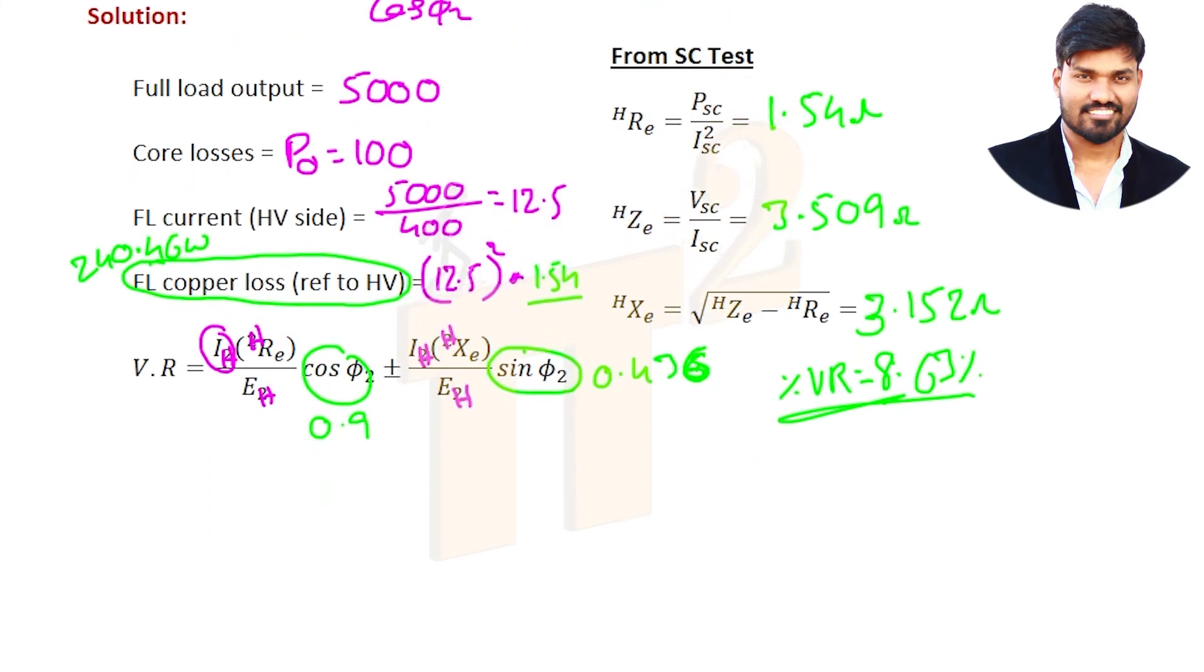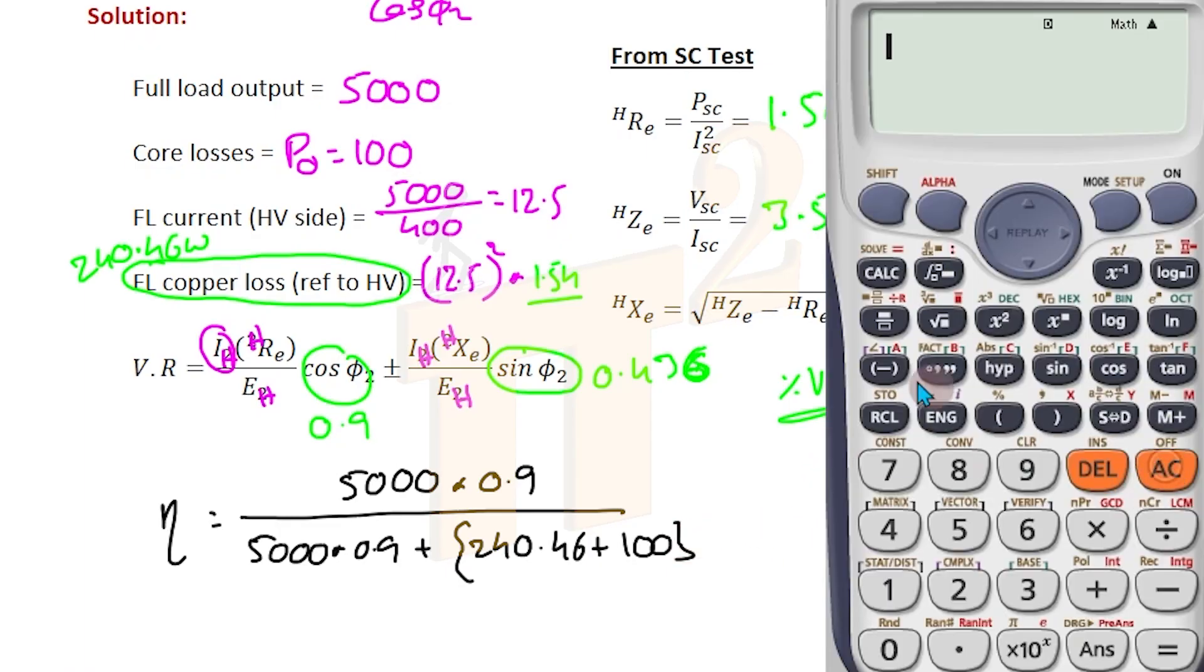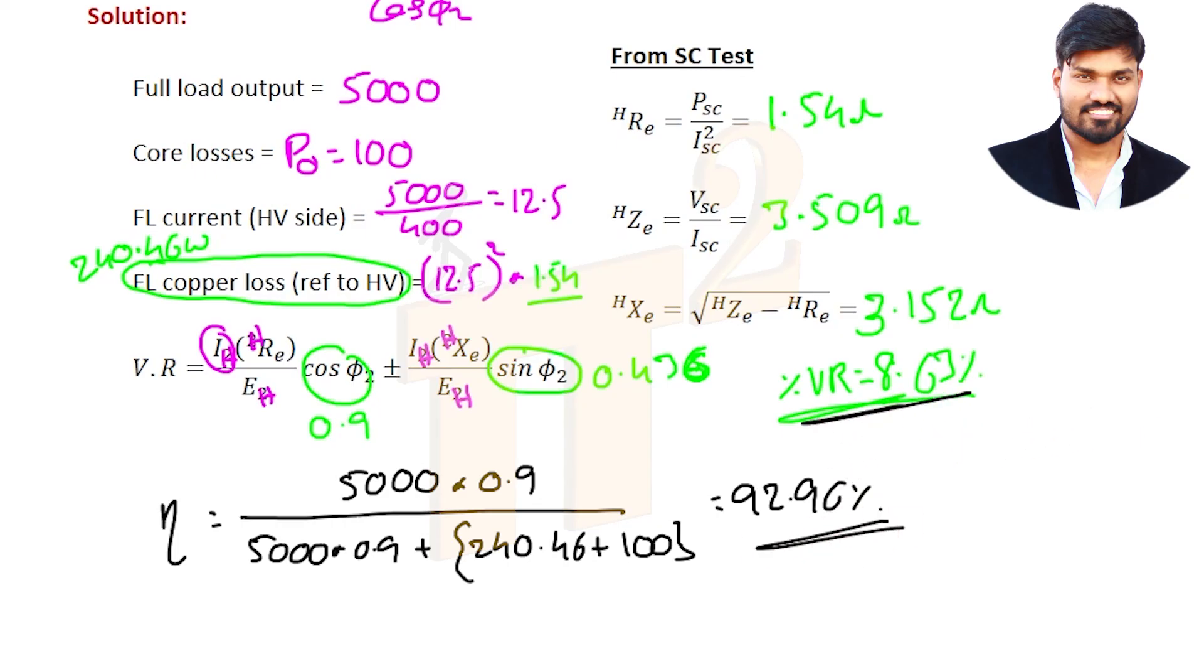Efficiency formula is easy. Efficiency equals output which is 5000 full load output times power factor 0.9, divided by 5000 times 0.9 plus full load copper loss 240.46 plus full load core losses 100, times 100. 92.96% is efficiency and voltage regulation is 8.63%. That's it.